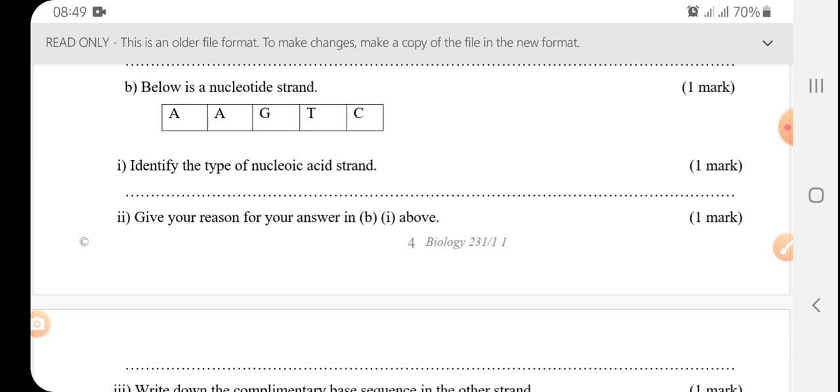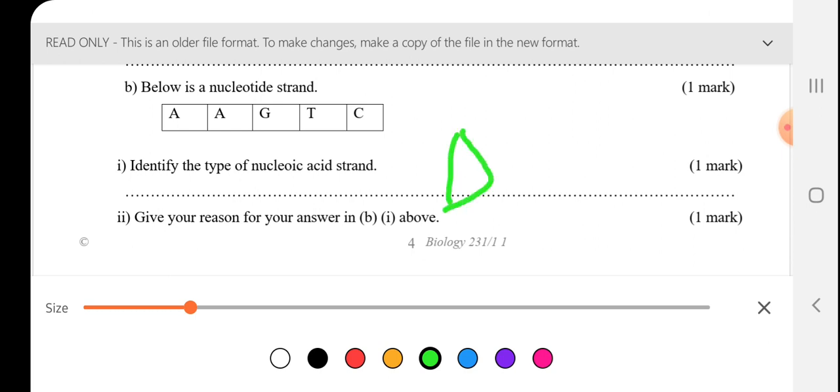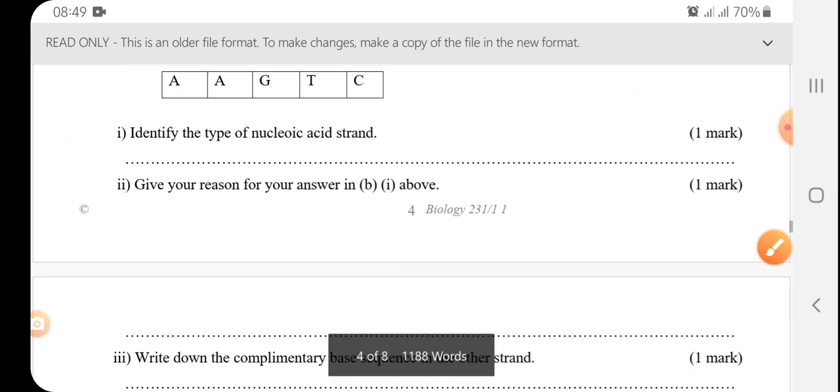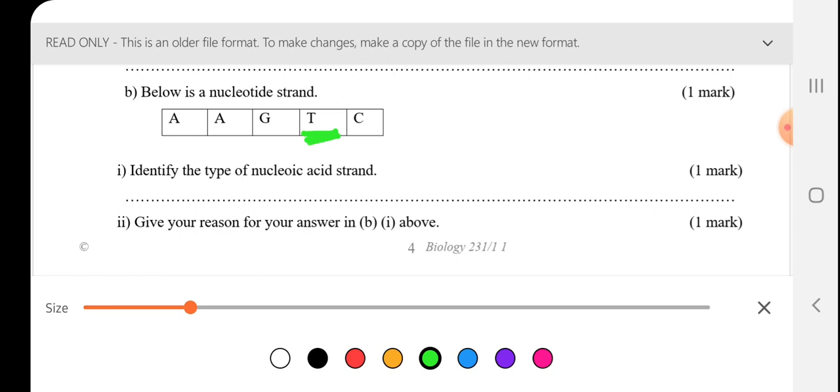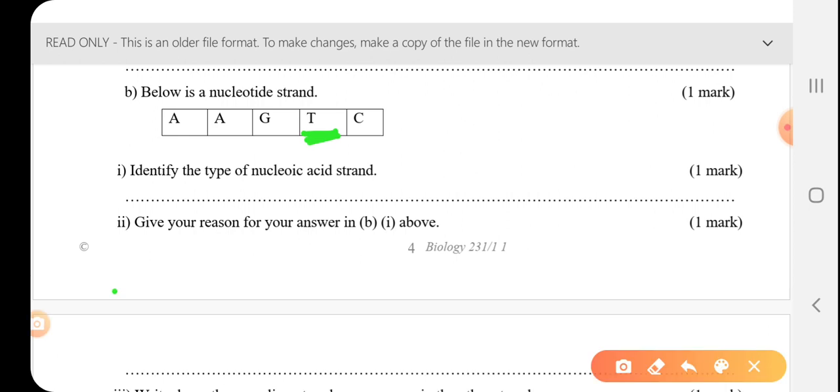Give an example of sex-linked trait on X chromosome. So they include hemophilia and color blindness. Below is a nucleotide strand, identify the type of nucleic acid strand. This is the DNA. Let me write it down, usually written in capital D and A, deoxyribonucleic acid. So give reason for your answer, it is due to the presence of the nitrogenous base thymine which is represented by T.